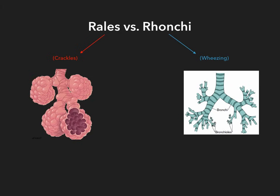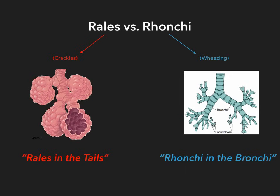Here is my mnemonic for remembering this major difference: Rails in the tails, Ronchi in the bronchi. This is one of my favorite mnemonics because for the longest time I had no idea what Rails or Ronchi were. So when I would read a pulmonary question in the Q banks, they'd describe a patient presenting with symptoms, and Crackles are heard at the left lung base, or Ronchi are heard in the right middle lobe. So I took it upon myself to create this mnemonic, and it's really gone a long way for me. I think it will for you guys as well.